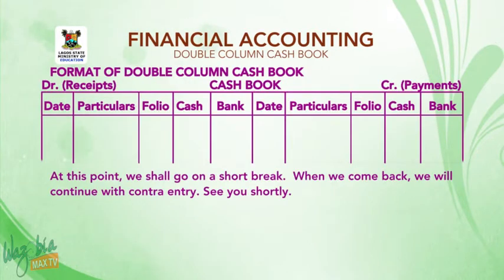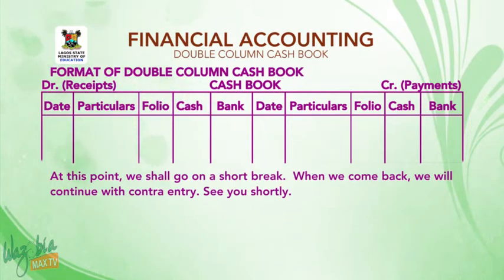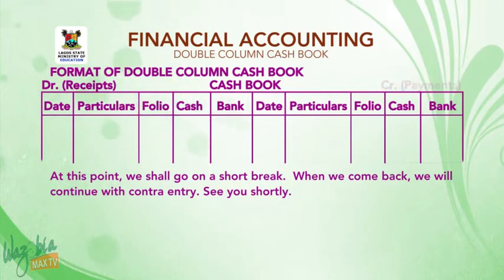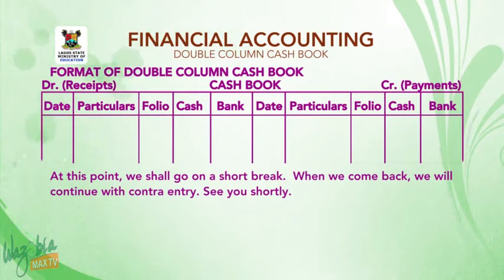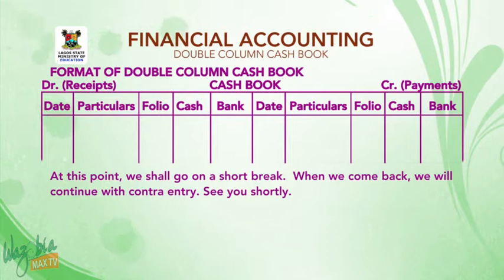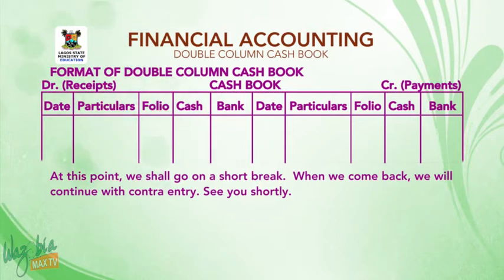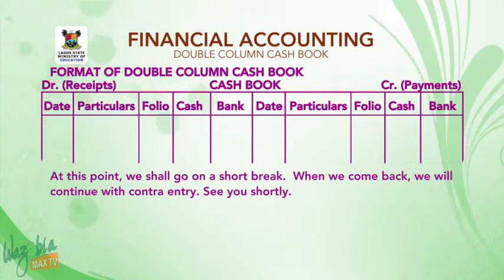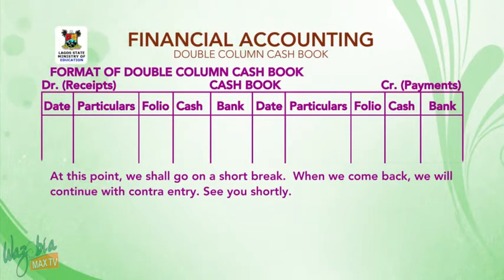Now let's look at the format of double-column cashbook. You have the T-format. On the left-hand side you have the debit side, which is the receipt side, and on the right-hand side you have the credit side, which is the payment side. Put the abbreviation CR on the payment side and DR on the receipt side, and write 'cashbook' as the heading. Then you have date, particulars, folio, cash, and bank columns on both the debit and credit sides. We shall now go on a short break; when we come back, we will continue with contra-entry.